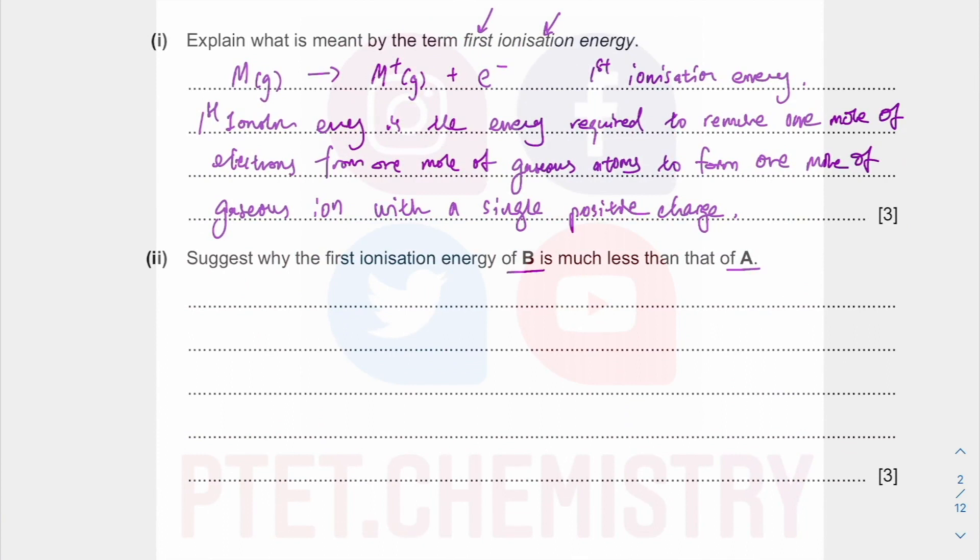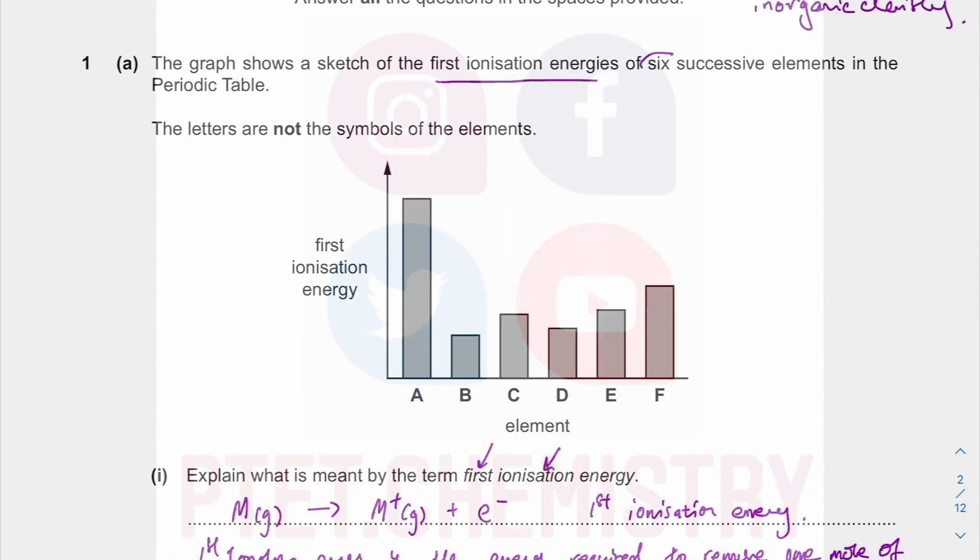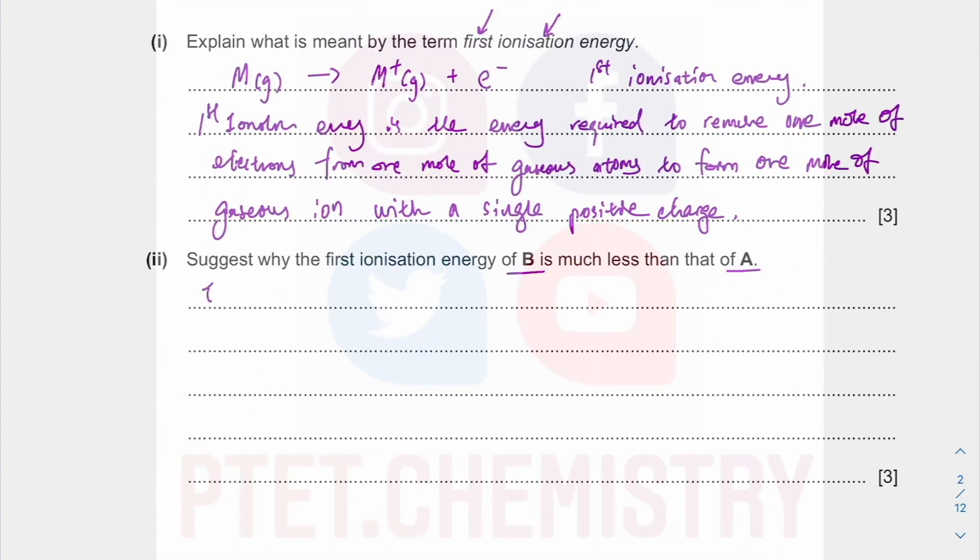Anyway, why is the first ionization energy of B so much less than A? I hope you understand that from A to B, you see such a big drop and then continuously increase across a period again. And this is about successive elements. So there are consecutive elements in order of increasing proton number. So this has to be fill in a new shell. It has got to be a new shell which is further away and more shielded from the nucleus due to the inner shell electrons. So the very significant, significant means noticeable, large decrease in the first ionization energy